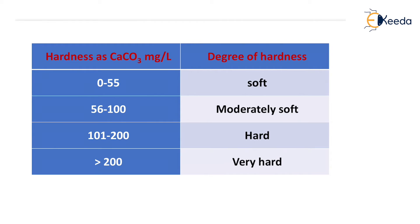The degree of hardness classification is: 0–55 mg/L as CaCO₃ is soft water; 56–100 mg/L is moderately soft water; 101–200 mg/L is hard water; and greater than 200 mg/L as CaCO₃ is very hard water.